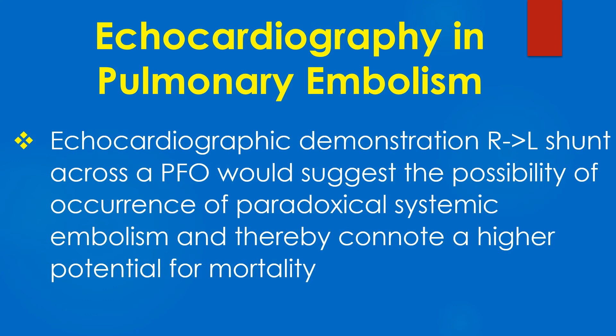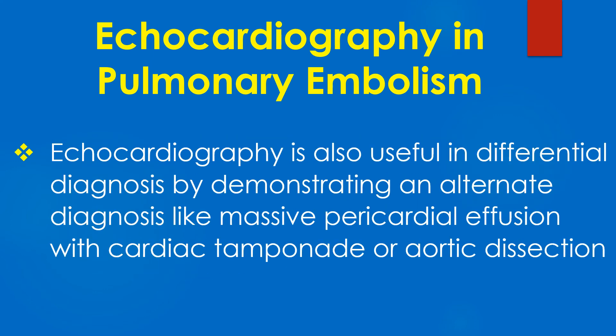Echocardiographic demonstration of a right-to-left shunt across a patent foramen ovale would suggest the possibility of paradoxical systemic embolism and thereby connote a higher potential for mortality. Echocardiography is also useful in differential diagnosis by demonstrating an alternate diagnosis like massive pericardial effusion with cardiac tamponade or aortic dissection.